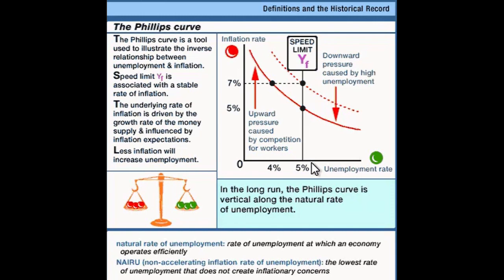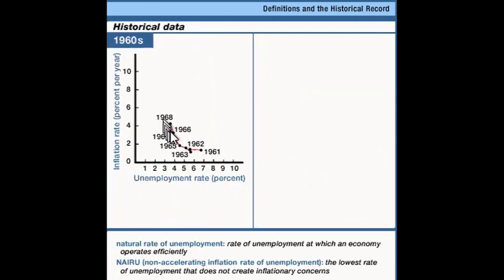Let's look at how our theory matches some actual data for the United States. If we look at the data from the 1960s, we see a very smooth downward-sloping tradeoff between the unemployment rate on the horizontal axis and the inflation rate on the vertical axis. As the economy built up to the Vietnam War, the rate of inflation was pushed up as government spending and a defense buildup drove the economy very hard. We pushed ourselves faster than the speed limit — the unemployment rate fell below the natural rate and the rate of price increase began to rise. So what we get in the 1960s appears to be the Phillips curve of our theory.